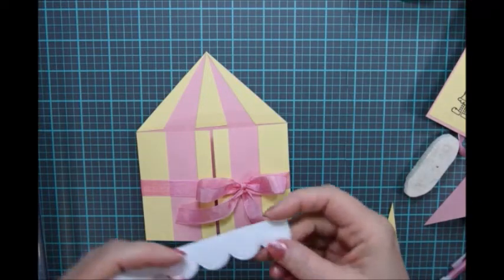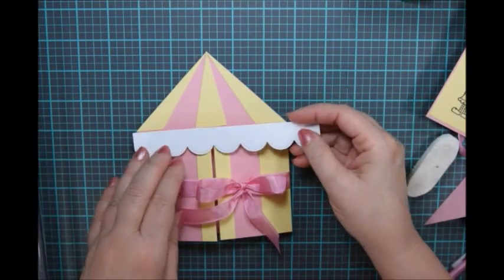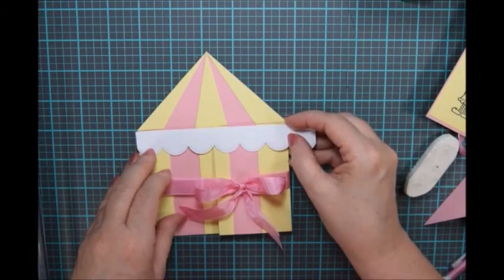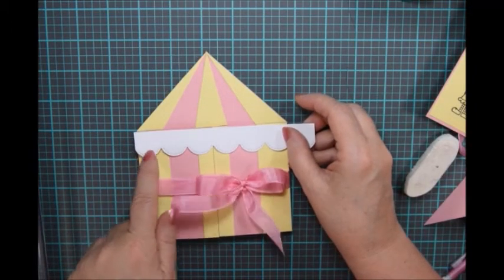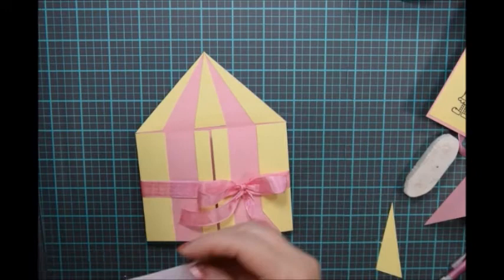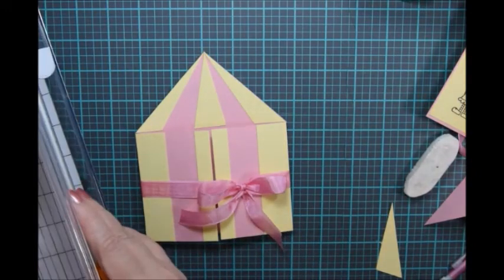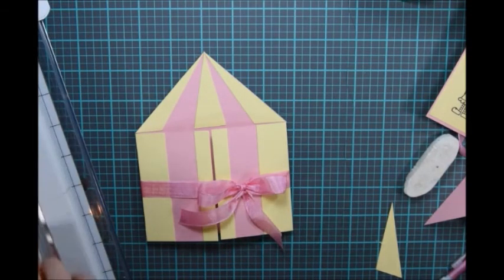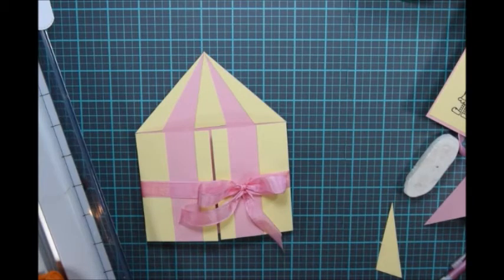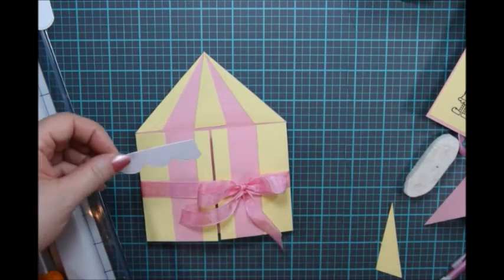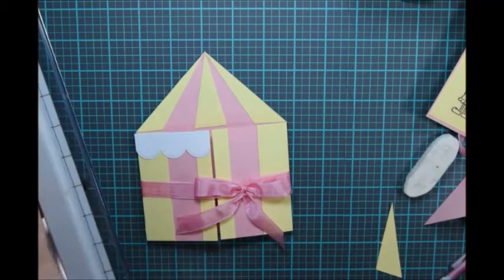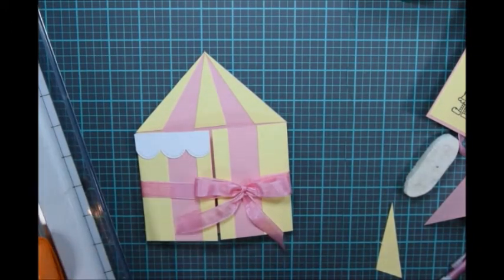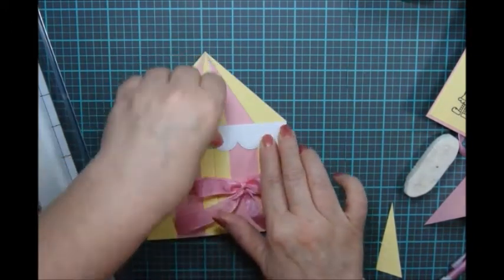All right, let's put on the, actually I probably would have done this before the bow, but it doesn't really matter. I'm going to cut these so that they fit and it takes three scallops to fit along the top. So I'm just going to use my paper cutter real quick and trim those off. Okay, now that is the basic circus tent gatefold card.